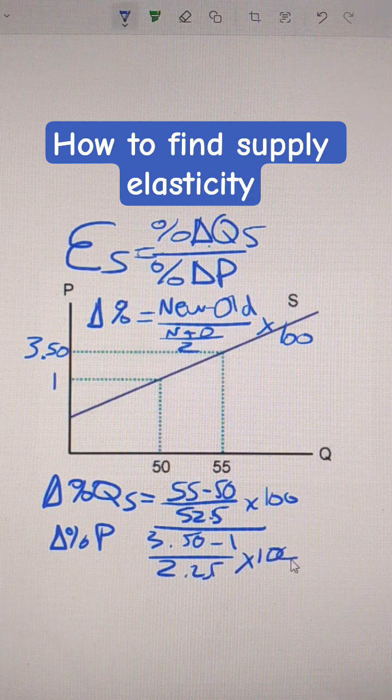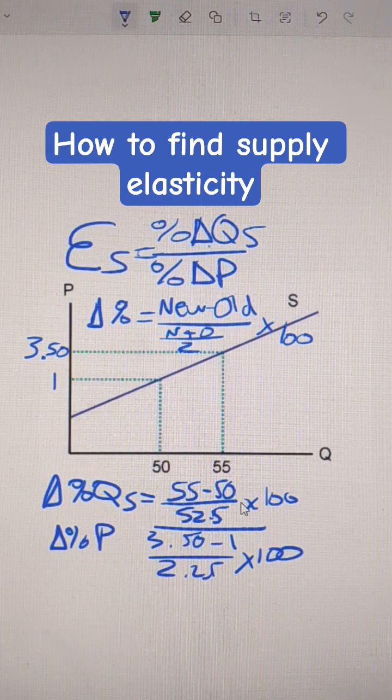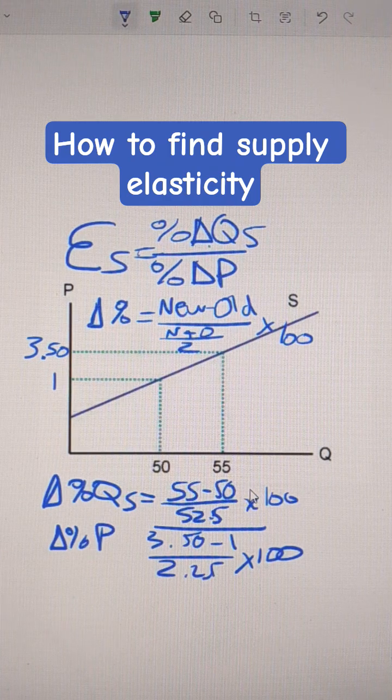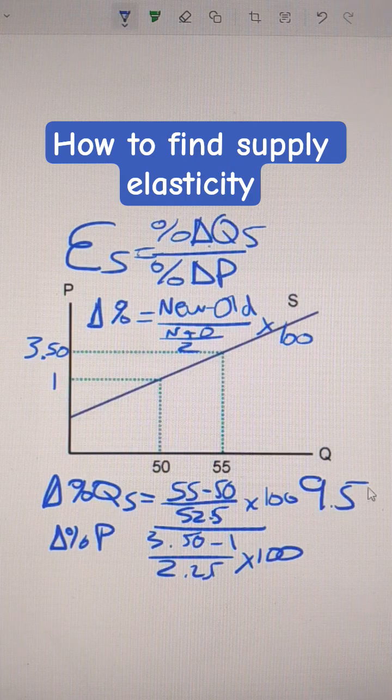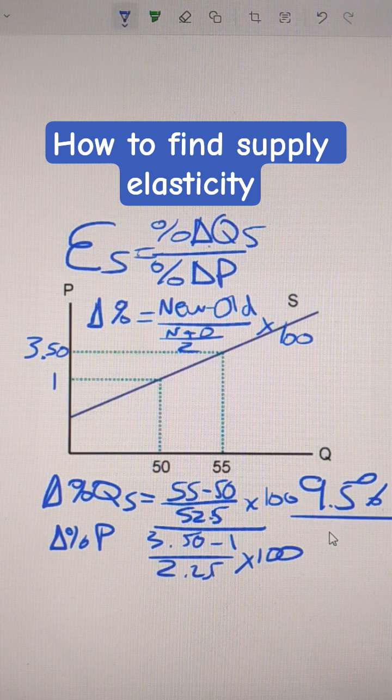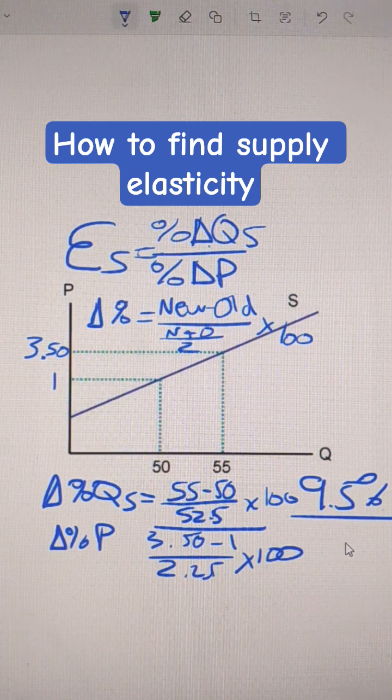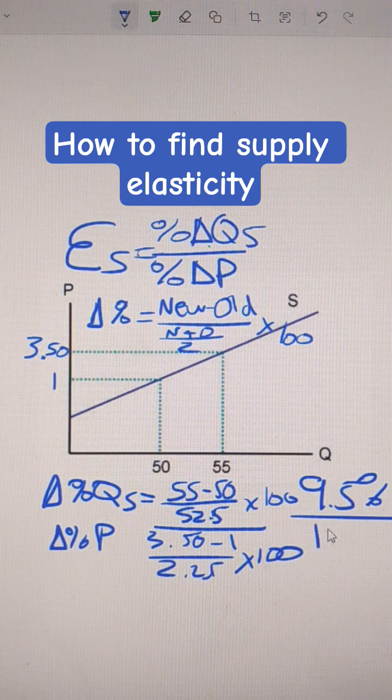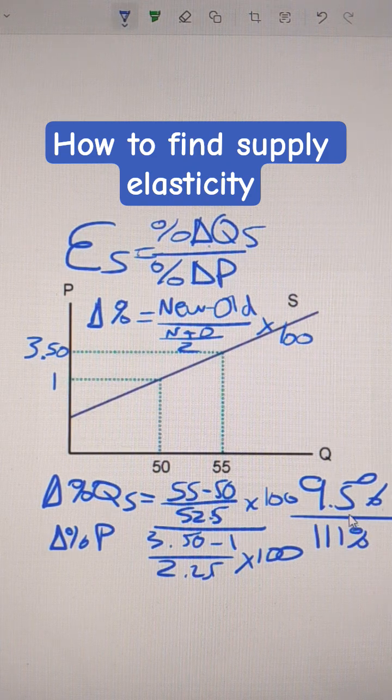And then multiply that by 100. And after doing that, this top number is 5 over 52.5. We end up with 9.5%. And then over 250 over 2.25, which is 111%. 9.5 over 111.